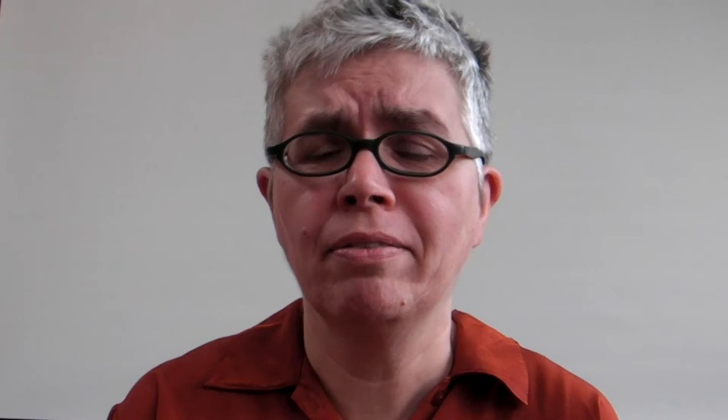In a minute we'll be doing a U-value calculation for a two-leaf masonry construction. To simplify things, we are assuming that the wall ties that hold the two leaves together are of a material with a very low thermal conductivity, like a polymer, so that we can disregard the effects.